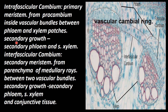But in secondary growth, what is the cause of growth? What is the real meaning of secondary growth? That is, the production of secondary phloem and secondary xylem. This is the cause of secondary growth — this secondary phloem and secondary xylem within the vascular bundle.